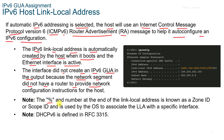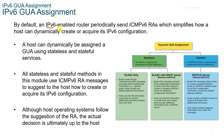The percent sign and number at the end of the Link Local Address is known as the Zone ID, or Scope ID, and it's used by the operating system to associate the LLA with a specific interface. DHCPv6 is defined in RFC 3315. By default, an IPv6-enabled router periodically sends an ICMPv6 RA, which simplifies how a host can dynamically create or acquire its V6 configuration.